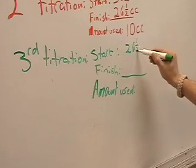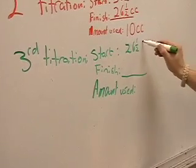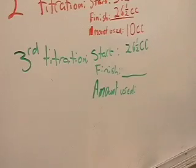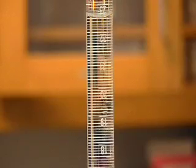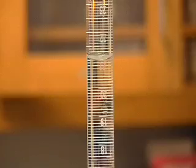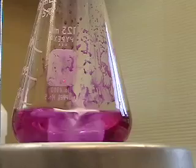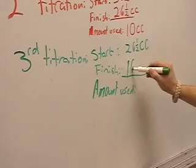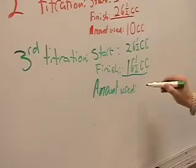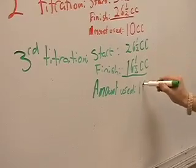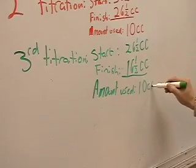For our final titration, we start with 26 and a half cc's of acid in the burette. After dripping some into the flask, we get 16 and a half cc's of acid left in the burette after neutralization occurred.